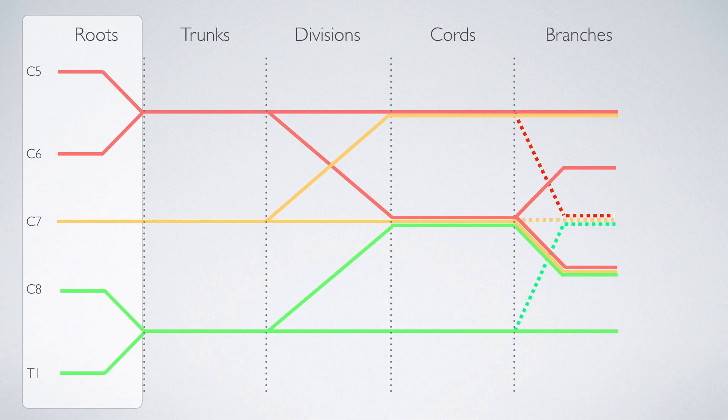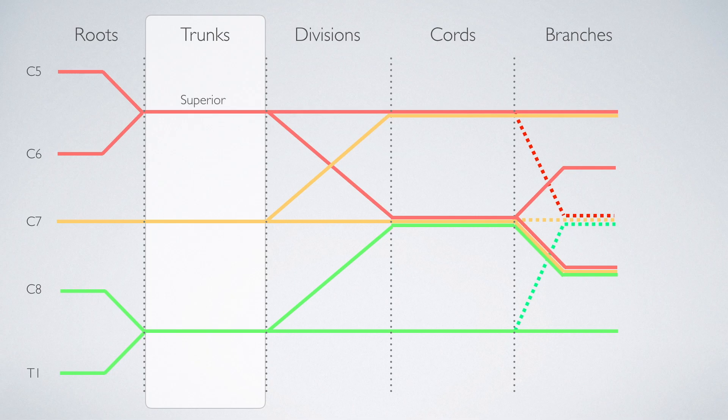Next we have the trunks. So the C5 and C6 roots merge to form the superior trunk, C7 continues on its own to become the middle trunk, and C8 and T1 merge to become the inferior trunk.